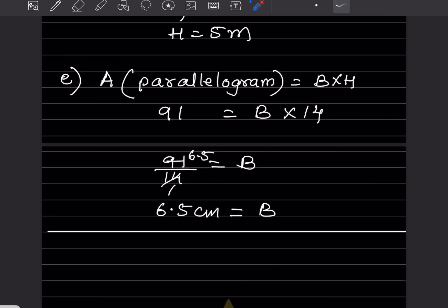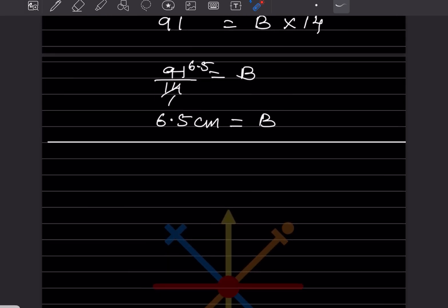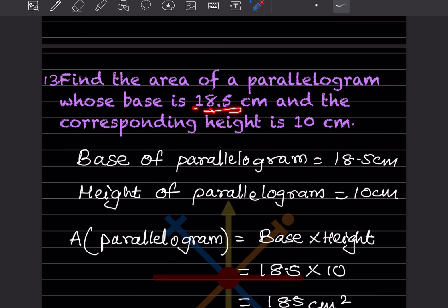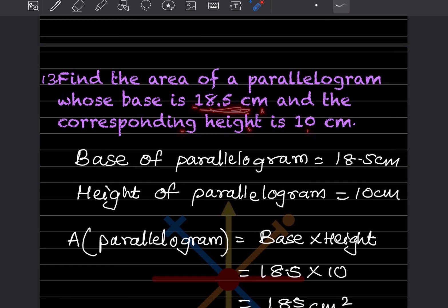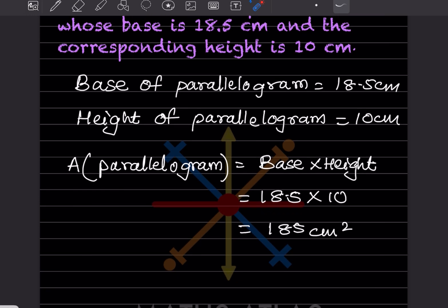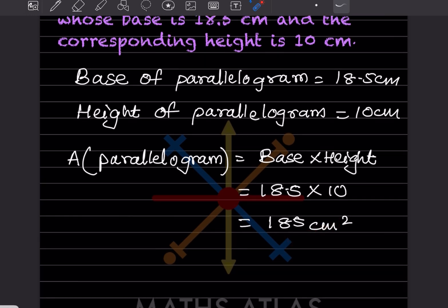Find the area of a parallelogram whose base is 18.5 centimeters and the corresponding height is 10 centimeters. Since it is a parallelogram, be careful — the formula is base × height. Substituting the given values, area = 18.5 × 10 = 185 centimeter square.